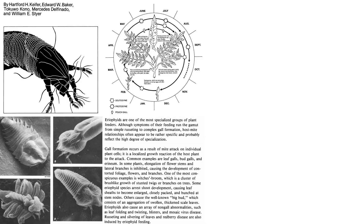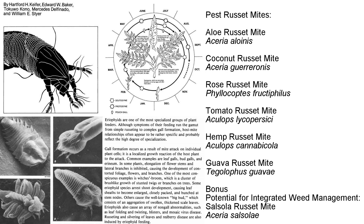Eriophyidae is the taxonomic family that comprises russet, rust, and gall mites. Generally speaking, the average russet mite is approximately 200 microns long, with a tapered, tube-shaped, white-tan colored body that is very distinctive for the group.